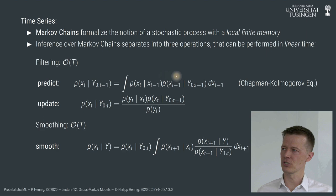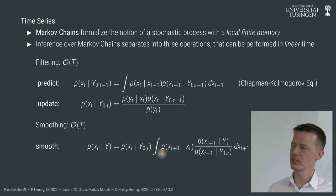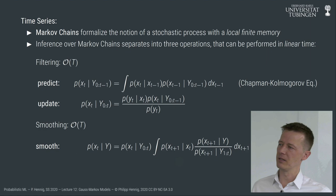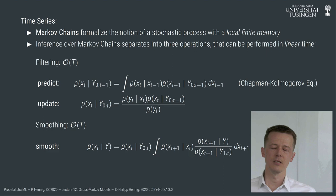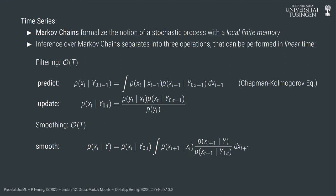In both the Chapman-Kolmogorov equation and the smoothing equation there is an integral over a general probability density function. I haven't told you yet how to do this in practice. But regardless of the exact structure of these probability density functions — assuming they exist — inference in this model is linear cost in time rather than cubic, as in general Gaussian process regression.